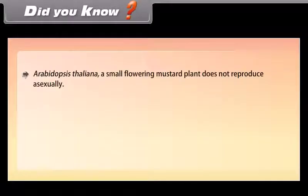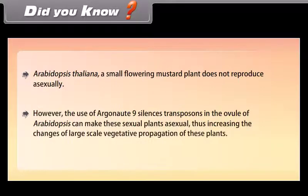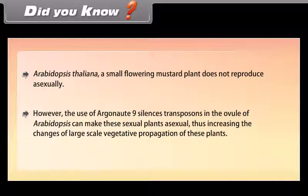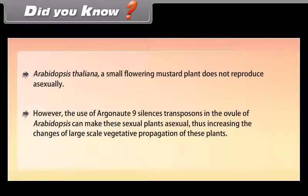Arabidopsis thaliana, a small flowering mustard plant, does not reproduce asexually. However, the use of Ergonaut 9 Silens's transposons in the ovule of Arabidopsis can make these sexual plants asexual, thus increasing the chances of large-scale vegetative propagation of these plants.